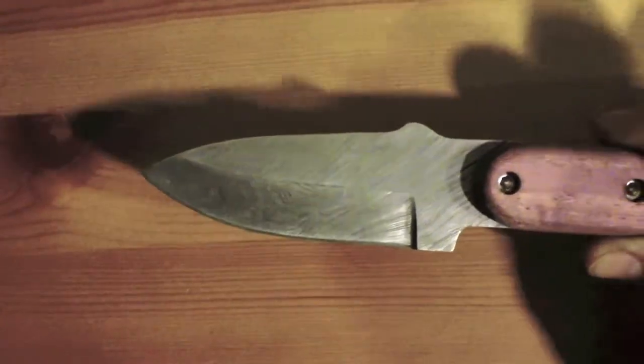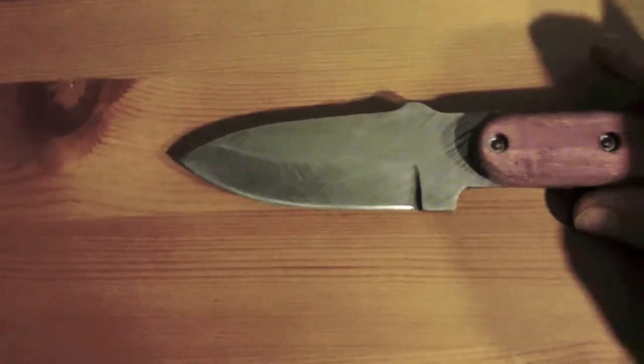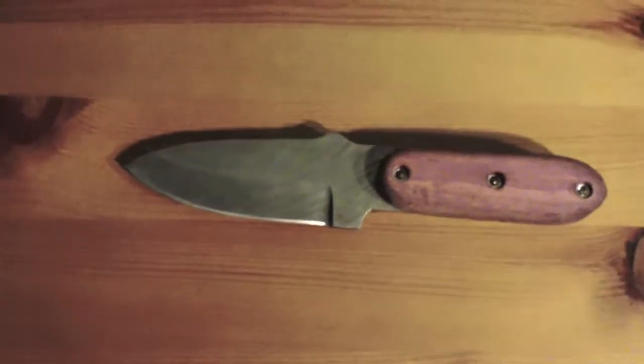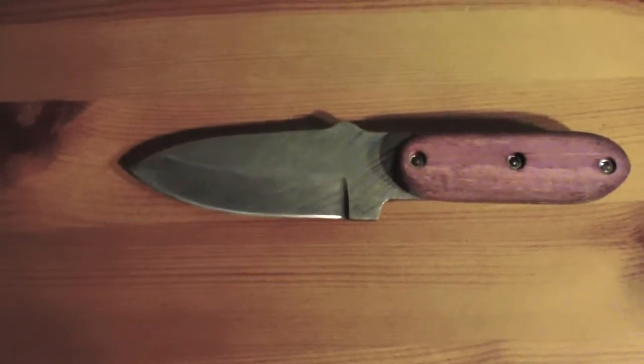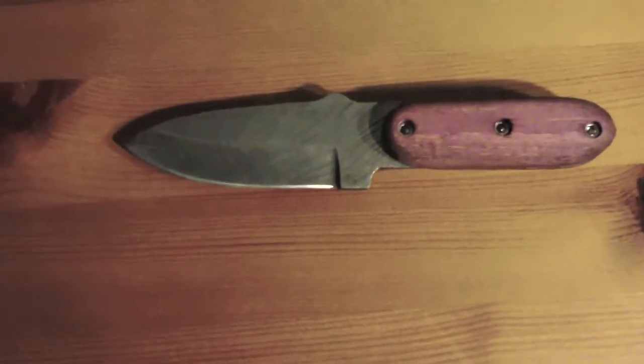It has two different types of steel in it. One is very good at keeping a sharp edge, but the other one gives the metal some forgiveness, a little bit of a bend instead of it being brittle and snapping.